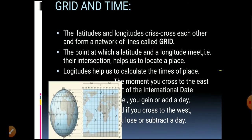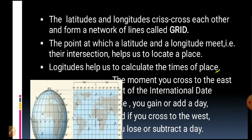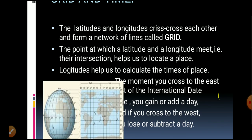Next, we will learn about grid and time. Latitudes and longitudes crisscross each other and form a network of lines called a grid. The point where a latitude and longitude intersect helps us locate any place on Earth. Longitudes also help us calculate the time of a place.